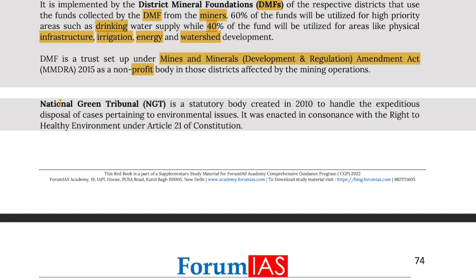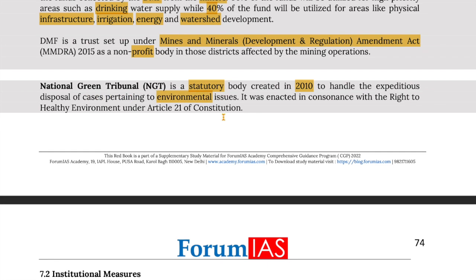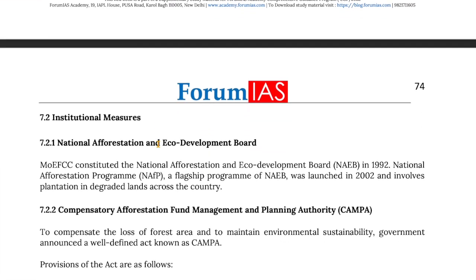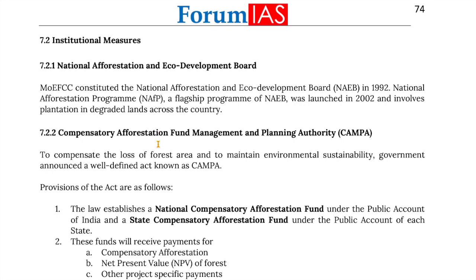The National Green Tribunal is a statutory body established in 2010 to handle the expeditious disposal of cases pertaining to environmental issues. It was enacted in connection with the right to a healthy environment under Article 21 of the Constitution. The National Afforestation and Eco-Development Board was constituted by the Ministry of Environment, Forest and Climate Change in 1992. The National Afforestation Programme, the flagship program of this board, was launched in 2002 and involves plantation on degraded lands across the country.